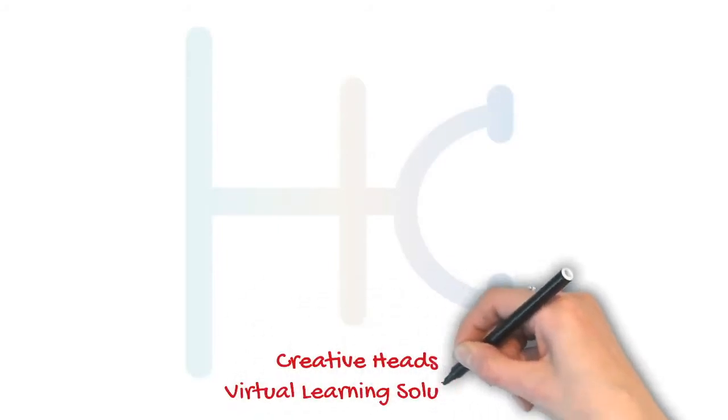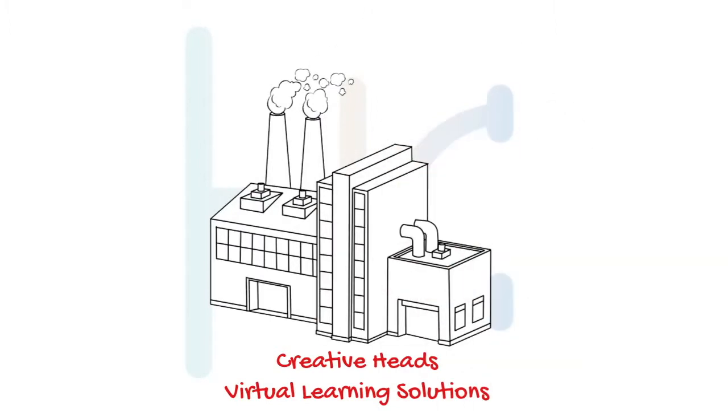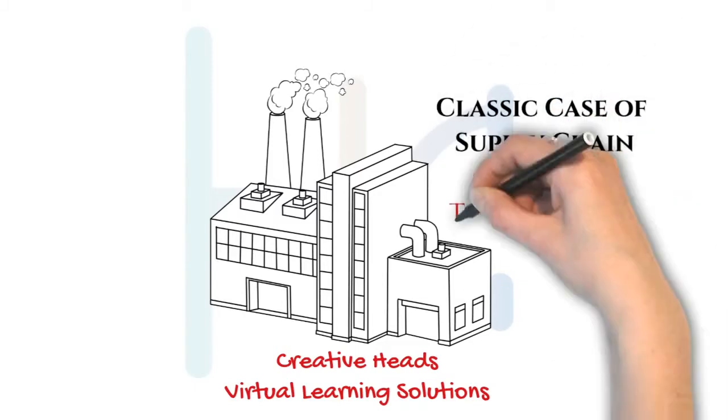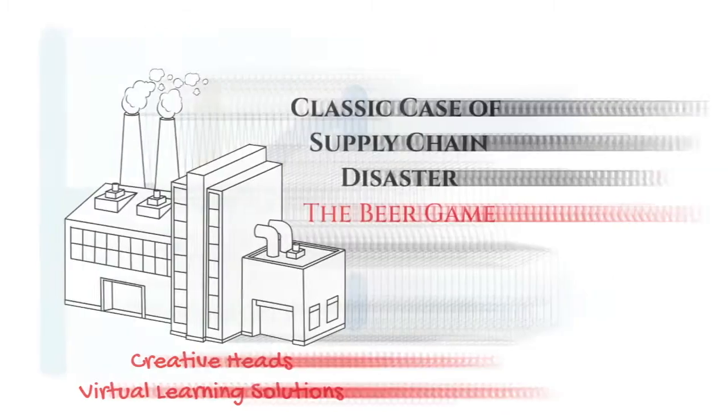Hello and welcome back to Creative Heads Virtual Learning Solutions. Are you associated with manufacturing industry? Or lead a team there? Stay with us for the next few minutes to learn a classic case of supply chain disaster known as the beer game, demonstrating a typical coordination problem of a supply chain process.